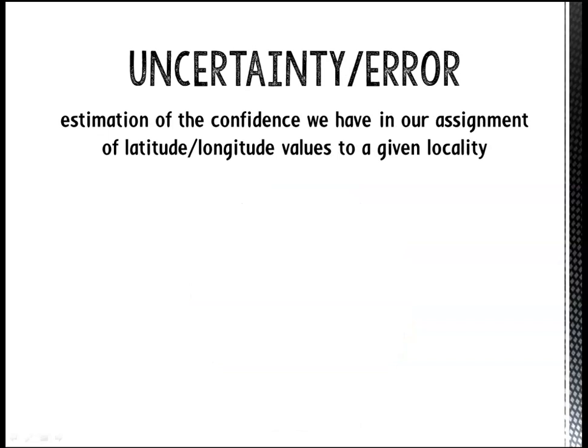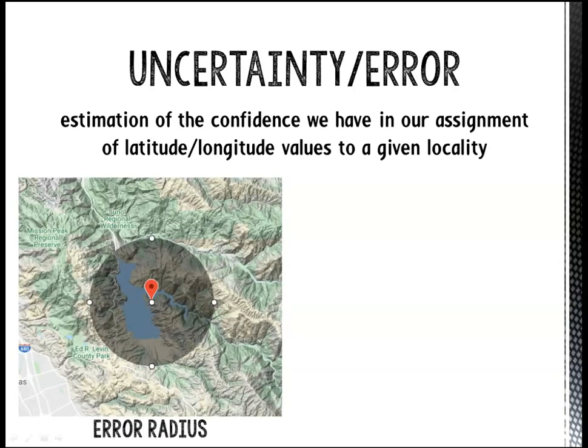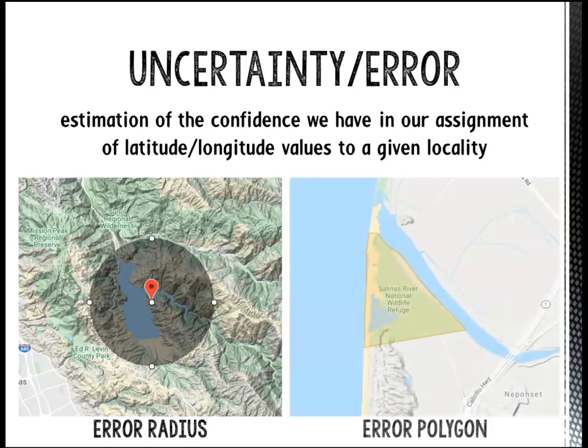When we use the words uncertainty or error in this course, we mean an estimation of the confidence we have in our assignment of coordinates to a given locality. Often, we estimate this uncertainty by measuring an error radius around our point, or by drawing an error polygon. In both cases, you can think of the uncertainty as encompassing a region in which we are 95% sure our specimen was collected. We'll describe how to assign error radii in Module 4.